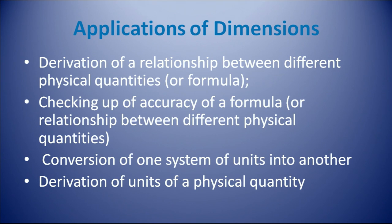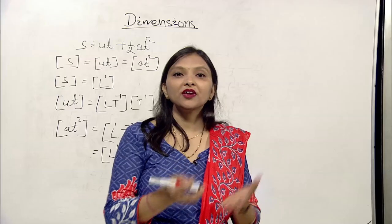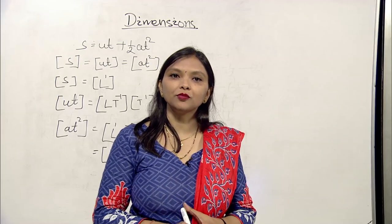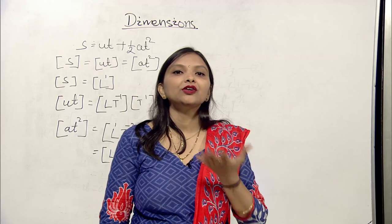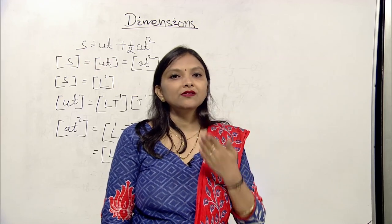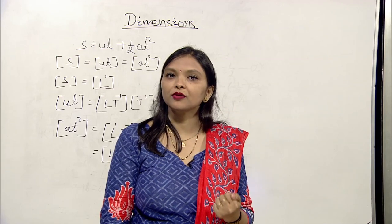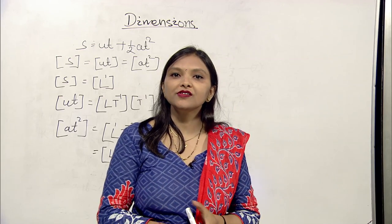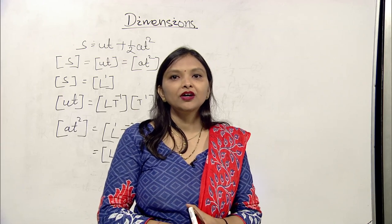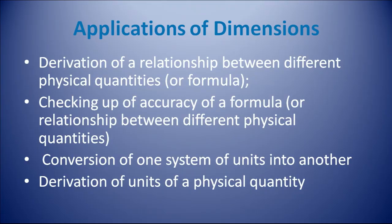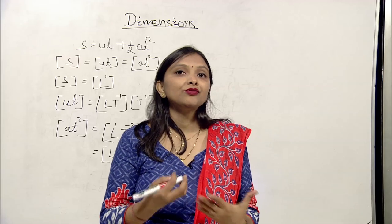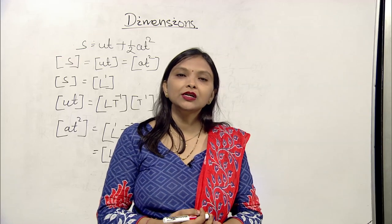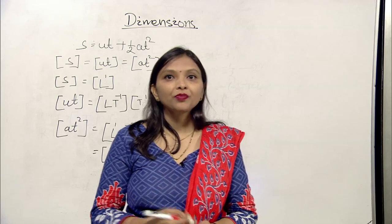The third application is conversion of one system of units into another. By applying dimensional analysis you can convert from MKS system of units to CGS system. For example, you can convert the unit of work — which is joule in SI or MKS system — to CGS system by using dimensional analysis. The fourth application is derivation of units of a physical quantity. You can derive the unit of any physical quantity by applying dimensional analysis.